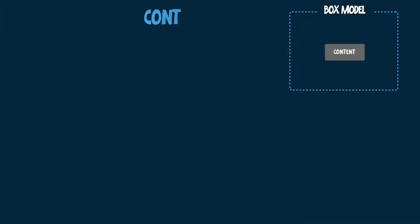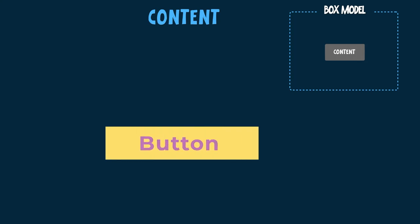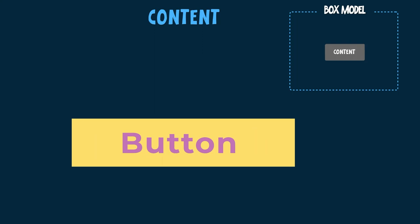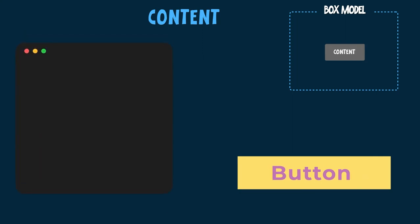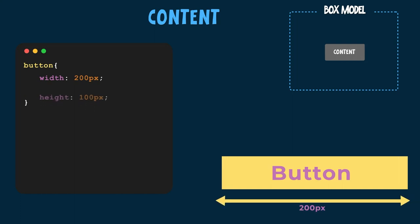To start, let's first look at the content, which is the first part of the box model. The dimensions of the content are determined automatically by the browser. For example, if we have a button with some text, its dimension is determined by the text and things such as its font size, to ensure that the text fits within the button. We can override this initial size using the width and height property, which will increase the initial width of the content within our box model.